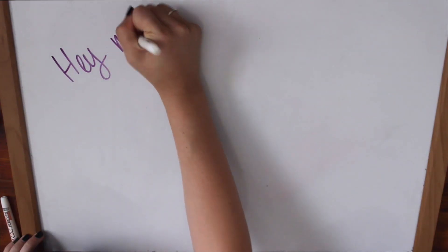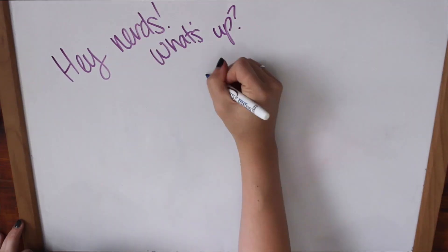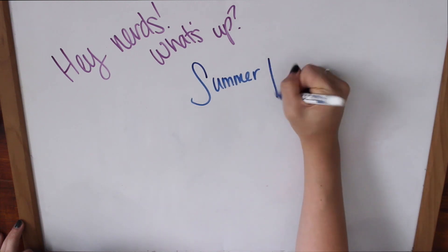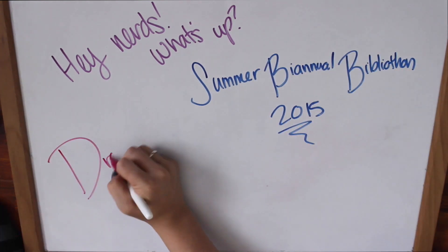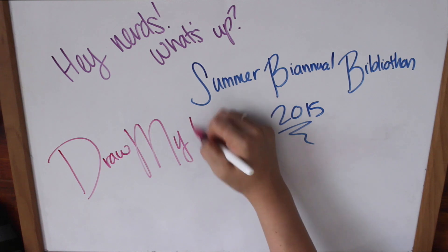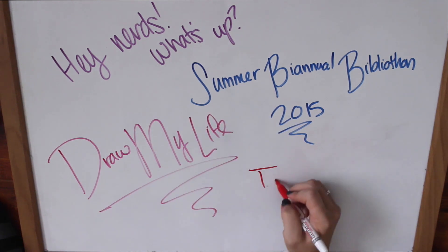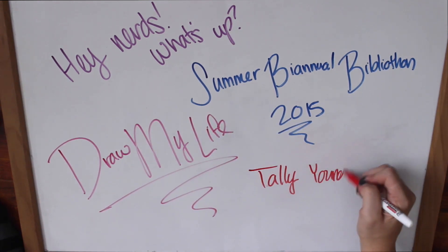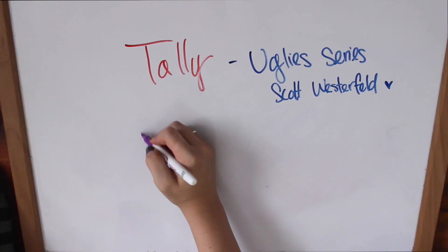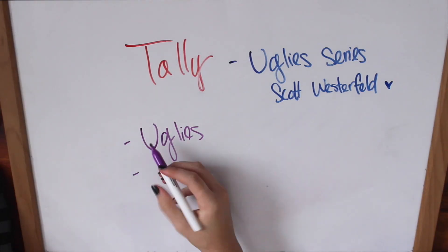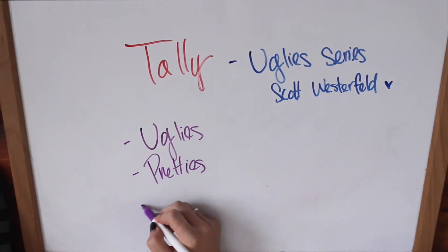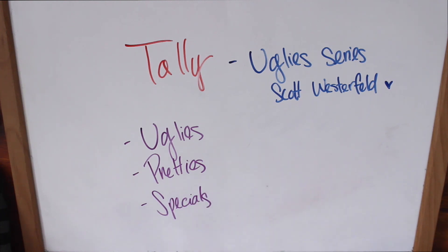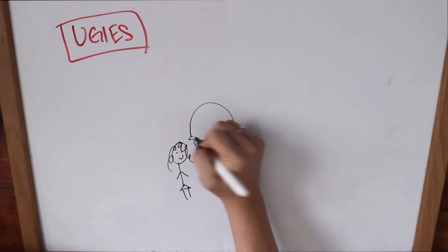Hey nerds, what's up? So today is Day 5 of the Summer Biannual Bibliothon 2015, and today we are doing Draw My Life as a Character. Today my character is going to be Tally Youngblood from the Uglies series, which means that there are going to be some spoilers for Uglies, Pretties, and Specials by Scott Westerfeld. My name is Tally Youngblood, and I have survived a world of changes. Let us begin.